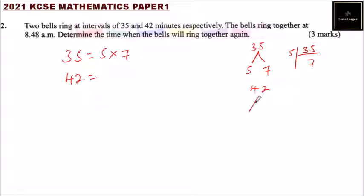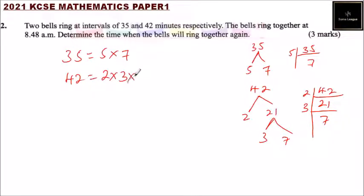For factors of 42, you can use the same method: 42 divided by 2 gives you 21, then 21 divided by 3 gives you 7. You did this in primary or in form 2. So the factors of 42 are 2 multiplied by 3 multiplied by 7.